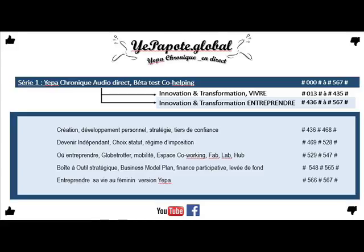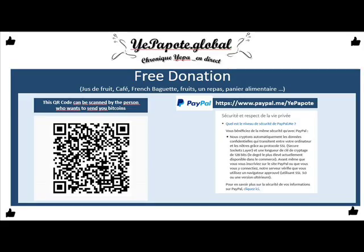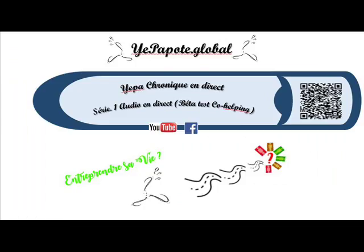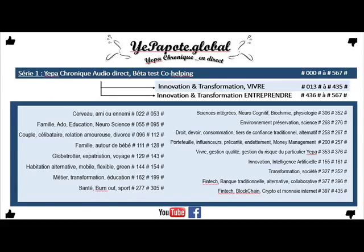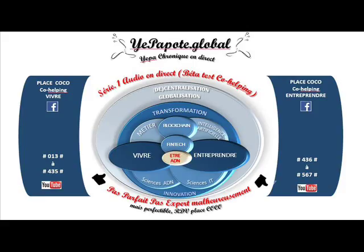Si vous avez choisi le régime d'imposition au réel simplifié, vous devrez fournir des déclarations normalement avant le 1er avril de chaque année. Si vous êtes une entreprise qui relève de l'impôt sur la société, vous pourrez procéder par télé-déclaration et télé-paiement obligatoire. Vous utiliserez l'imprimé 2065 plus 2050 à 2059G.